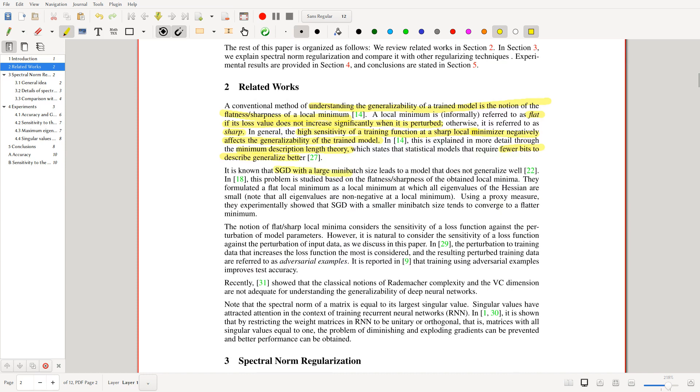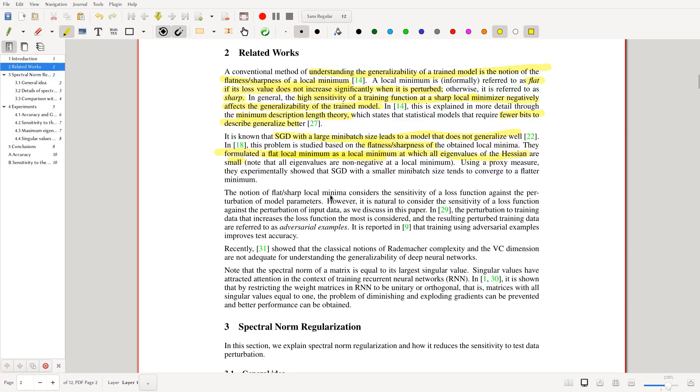So it is known that SGD with large mini-batch leads to a non-generalizing model, one that doesn't generalize well. And in this paper, it's studied based on the flatness and sharpness of these minima. They formulated a flat local minima as a local minima where eigenvalues of the Hessian are small. The notion of flat sharp local minima considers the sensitivity of loss function against the perturbation of model parameters. However, it's natural to consider sensitivity of loss function against the perturbation of data. And this is what they do in this paper, right? This is the idea.